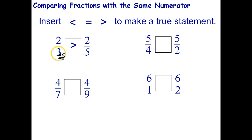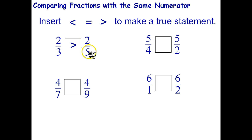In general, the bigger the pieces — or the smaller the denominator — will give you a bigger fraction than with a larger denominator. So two-thirds is greater than two-fifths. Try the remaining three questions, please.